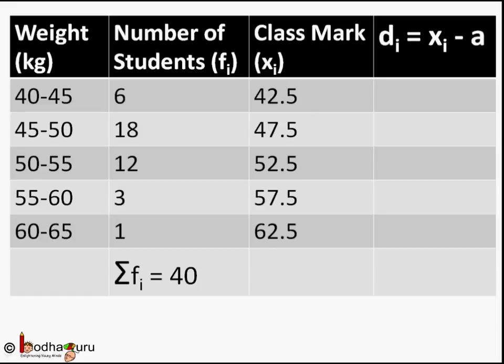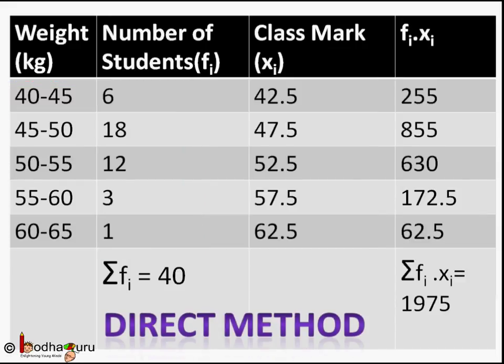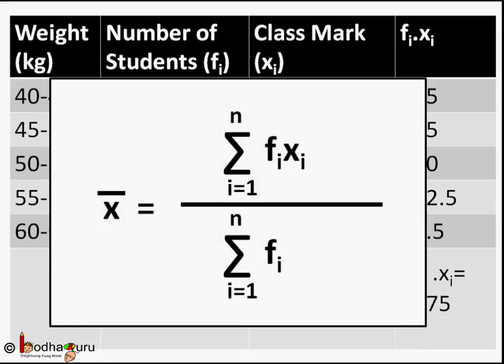This method is useful when values of observation and frequency are large. This method will help us calculate mean with simpler calculations. To revise, from the last video we know how to find mean of grouped data using direct method. It is similar to finding mean of ungrouped data, only difference is that here xi is the midpoint of each class.